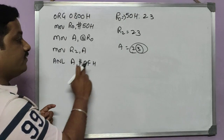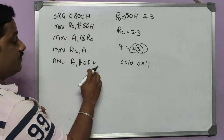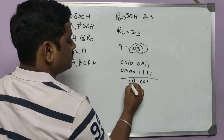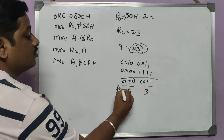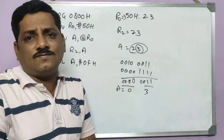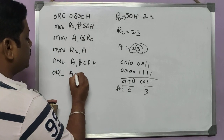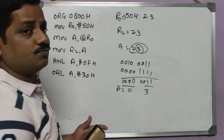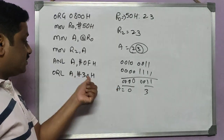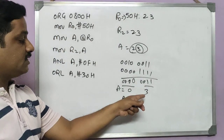Let me show the binary logic: 23H in binary is 0010 0011, and 0FH is 0000 1111. When we AND these two, we get 0000 0011, which is 03H. So only the lower nibble 3 remains in the accumulator. Now I add 30H using ORL A, #30H — I use ORL rather than ADD to avoid a carry. The accumulator now has 33H, which is the ASCII code for the BCD digit 3.